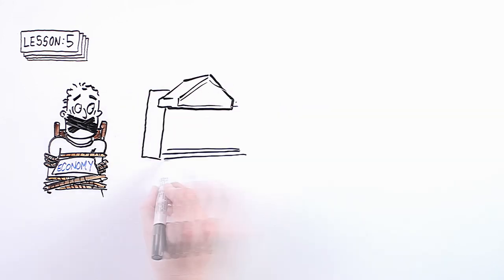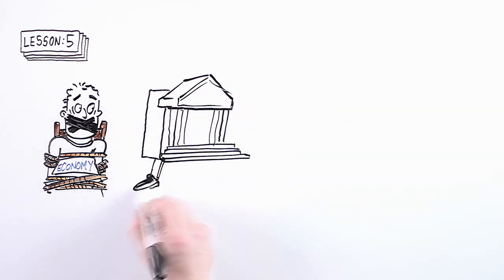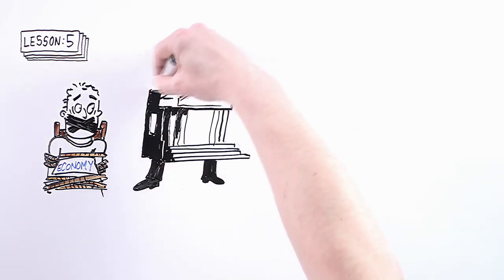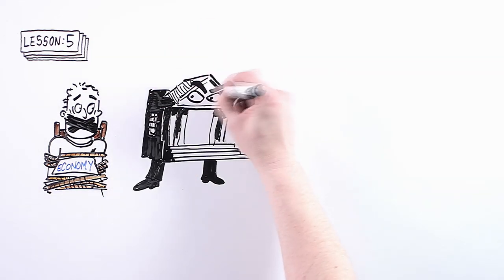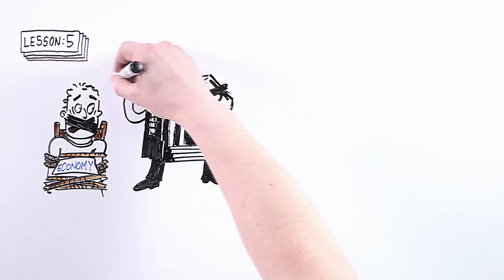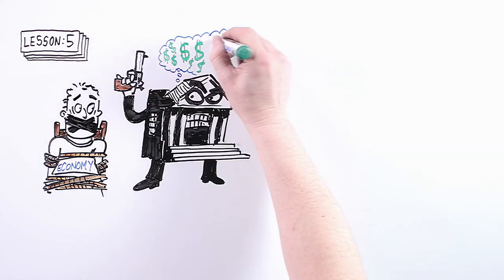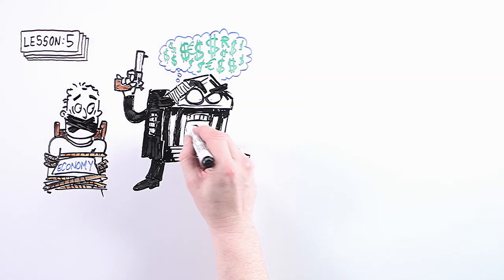The bankers are the kidnappers. The economy is the hostage, and the bankers threaten the politicians that if they don't get bailed out with as much money as they need, then they will shoot the hostage, the economy, and the entire thing will implode.